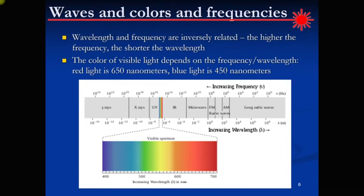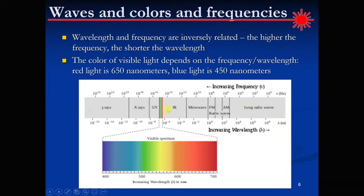Wavelength and frequency are inversely related — the higher the frequency, the shorter the wavelength. For light, the frequency and wavelength manifest in the perceived colors of visible light. Red light in the electromagnetic spectrum tends to be around 650 nanometers, and blue light somewhere around 450 nanometers. Of course, there are frequencies and wavelengths we don't see, like gamma rays, x-rays, infrared, and so forth.